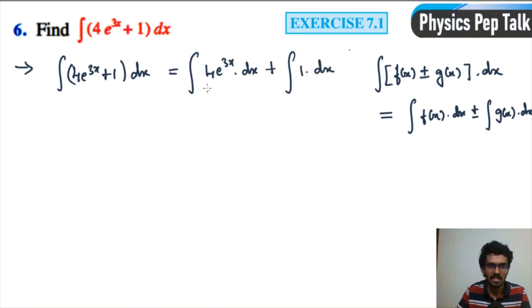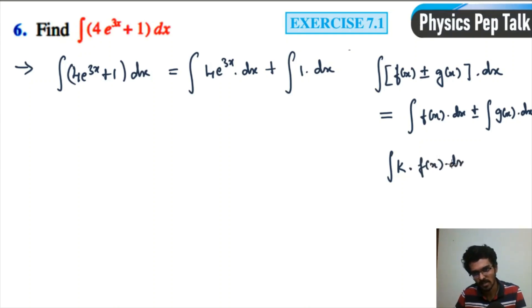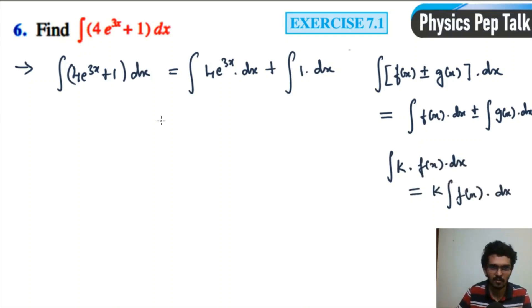Now I will explain the first term. That is of the form integral of k times f(x) with respect to x, where k is a constant.